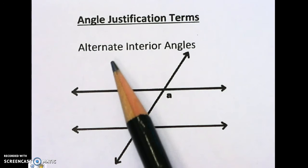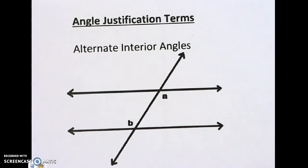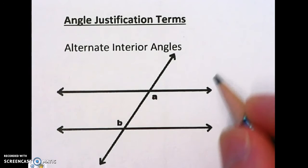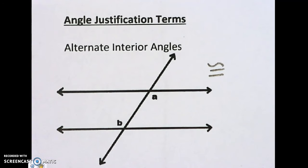The first one here is alternate interior angles. They're inside the parallel lines, and they are congruent. They're the same size. A symbol for congruent is an equal sign with a squiggly on top. That means they're the same size angles.